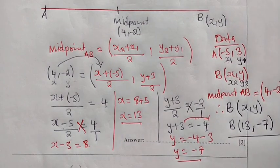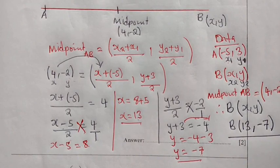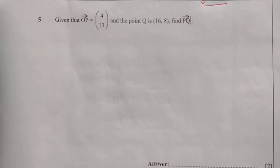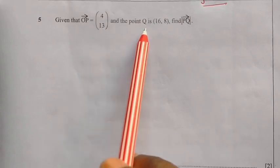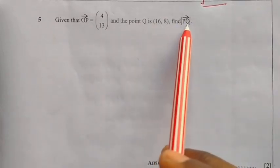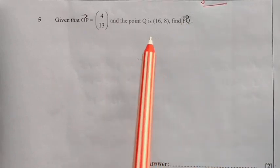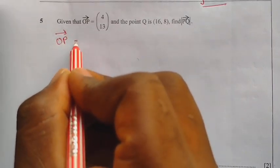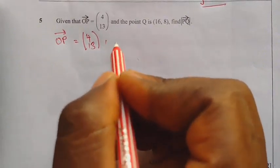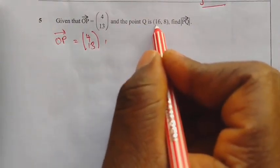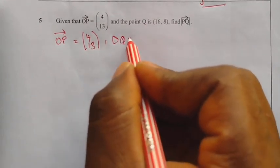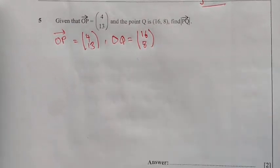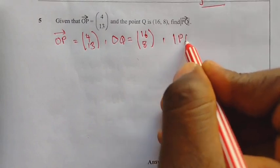These are the coordinates of B. We are done answering this question. Now we proceed to the last question — question 5. Given that the position vector of OP equals 4 and 13, and point Q is 16, 8, find the magnitude of PQ — meaning find the distance of PQ.